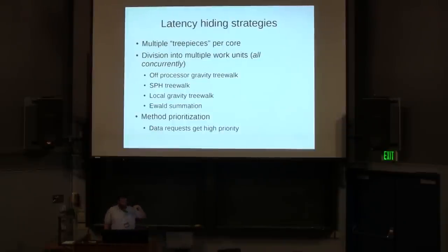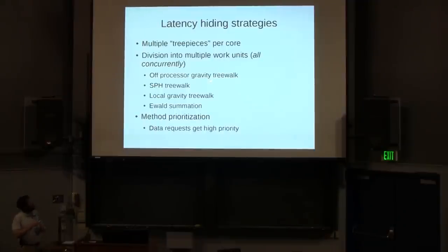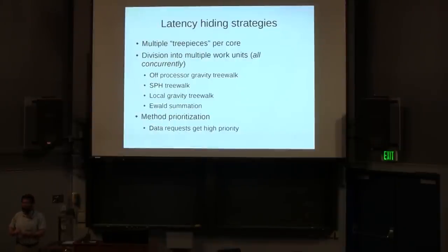To review strategies for hiding communication latency: if one tree piece is waiting for remote data, another tree piece can be executing. Furthermore, within a tree piece, if the remote tree walk is waiting for data, I can be doing either the SPH walk or local gravity tree walk, or periodic boundary conditions if needed — several pieces of work that can overlap. You can also specify the priority of messages in the queue, and you generally want things providing data to end up in front of the queue, so you get your data back quickly to continue the walk waiting for it.